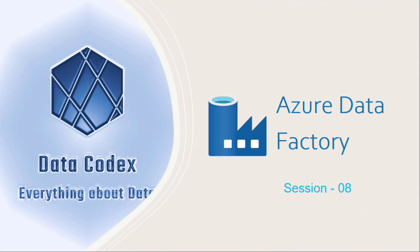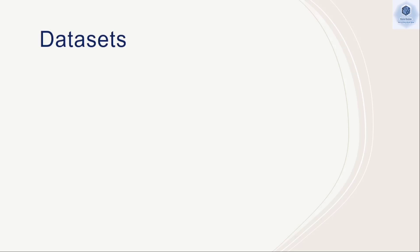Welcome back to the next video in the Azure Data Factory playlist. Today we are going to learn about datasets in Azure Data Factory. In our previous videos we learned about integration runtime and linked service. In Azure Data Factory, the hierarchy falls from integration runtime — once you create an integration runtime, you can create a linked service, configure connection strings, and provide connections for your source and destination. Once the connection is established, you can refer to any data available using datasets.